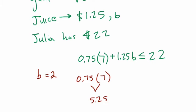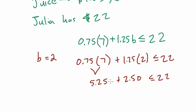So $5.25 on gum plus $1.25 times B, right, or two, which is $2.50. And she's totally in the clear, right, because this amount that she spent is definitely less than $22, right? It is $7.75. It's less than 22. She's okay.